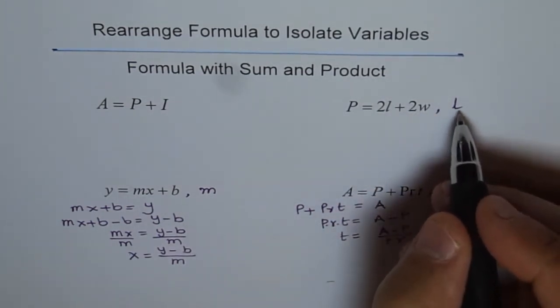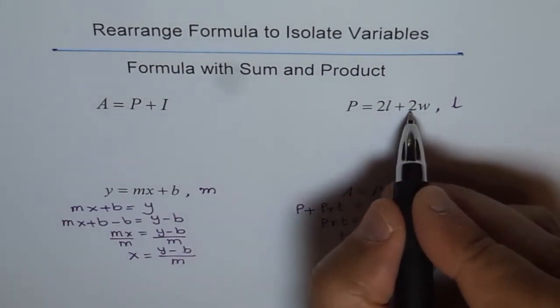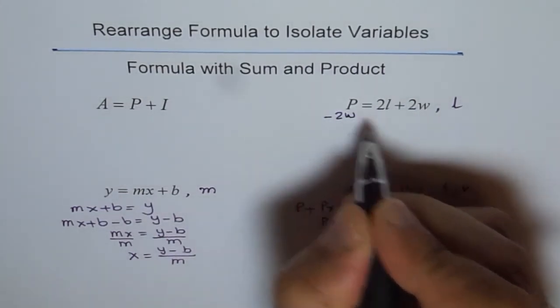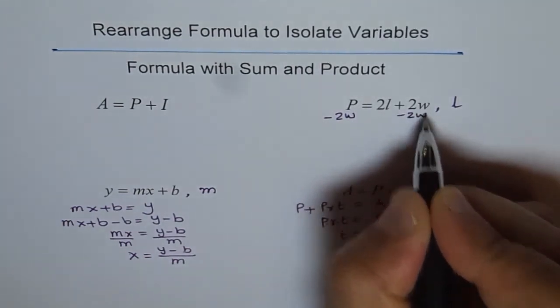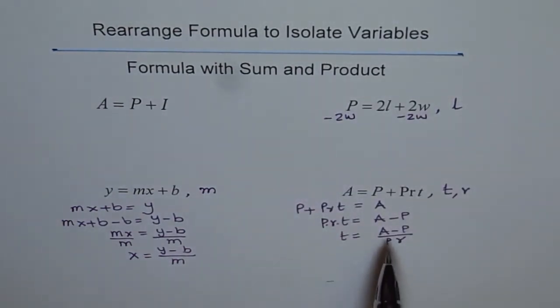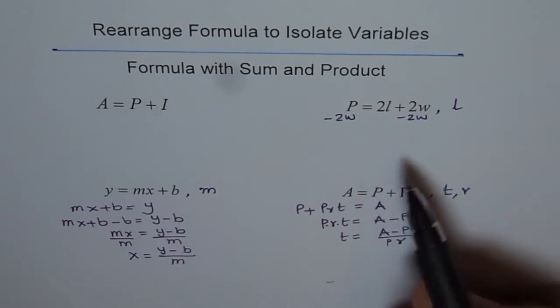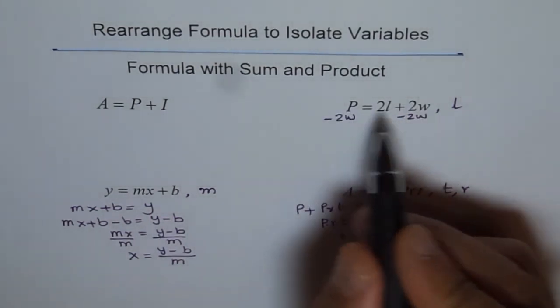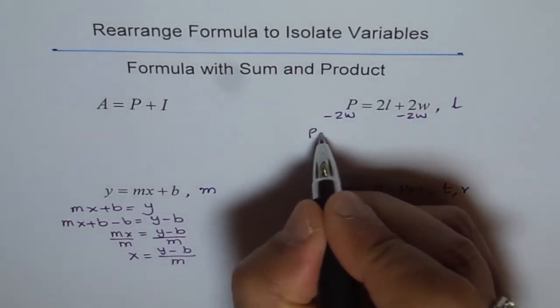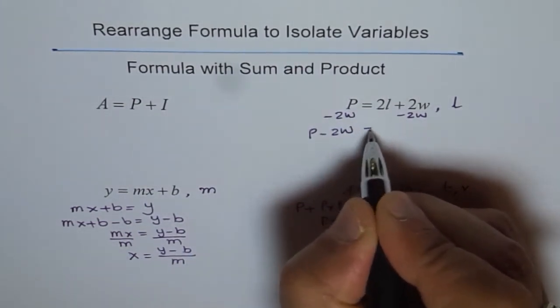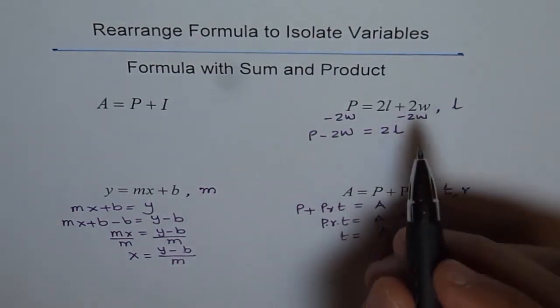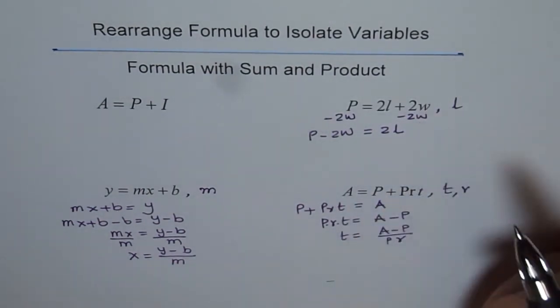So, length should be, we don't want 2W. So, we will take away 2W from both sides. So, what I am trying to do is, I am doing 2W minus from both sides. So, I am trying to explain you in these formulas different ways of doing the same thing. So, when we do minus 2W from both the sides, we get P minus 2W equals to 2 times L length. Because 2W minus 2W is 0.